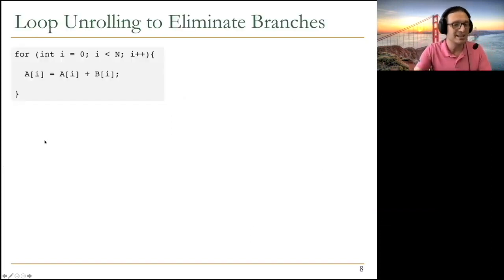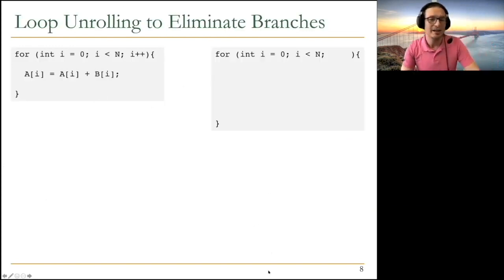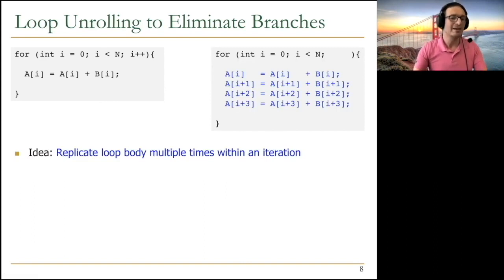So basically, branch handling is a big problem. So a lot of compilers use loop unrolling to eliminate branches. Basically, loop unrolling replicates the loop body multiple times within an iteration. So you may actually have learned about loop unrolling. I have to say it, because it's a very basic compiler technique, to get rid of branches as much as possible. Because branches always provide problems in VLIW, decoupled access and execute, as well as systolic arrays.